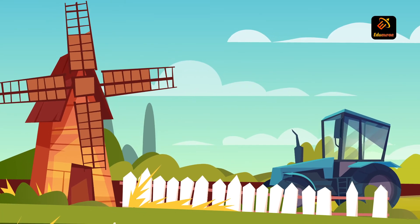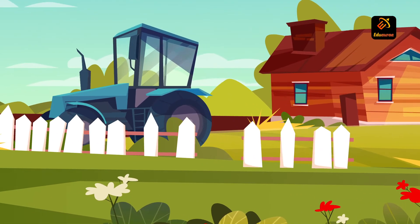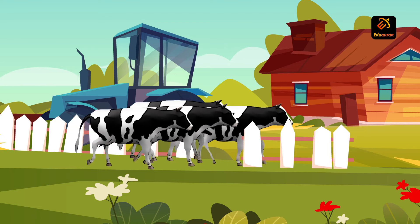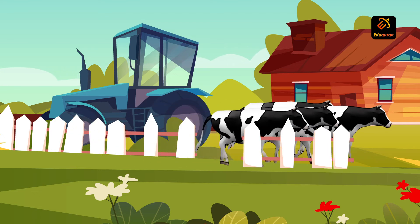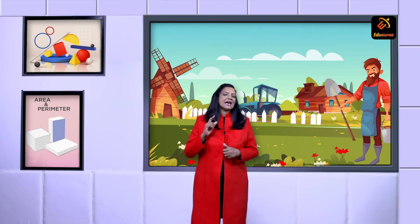Let's start exploring mensuration. Few days back I went to visit a farm in a village. I saw that at some places the boundary along the fence was broken, so the cattle came in and they were having a feast with the leaves of the fruit trees. The owner was obviously very annoyed and he wanted to repair the fence. So for that, what do you think he should do first? Yes, he has to take the exact measurement of the boundary of the farm.